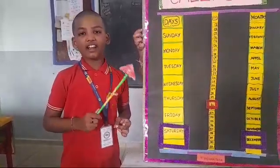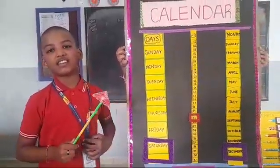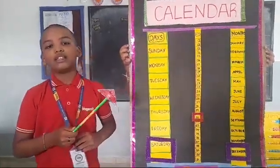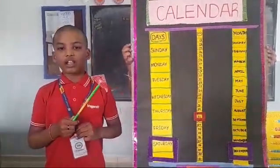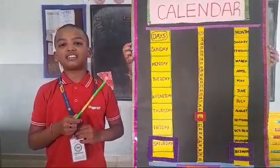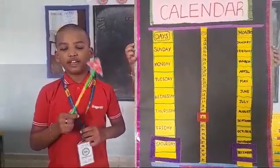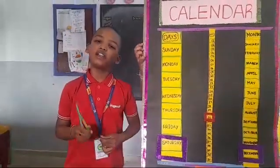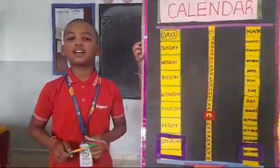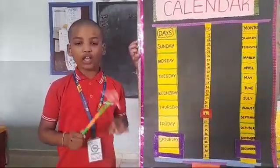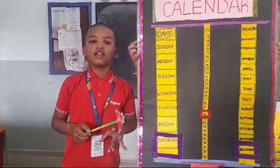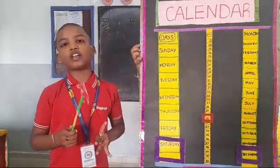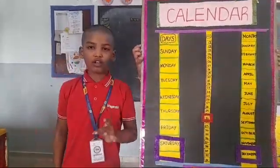Calendar consists of 366 days, 52 weeks and 12 months. In a leap year, a calendar has 366 days where February month consists of 29 days. There are different types of calendars such as solar, lunar and Chinese calendars. The most used calendars are Gregorian calendars.